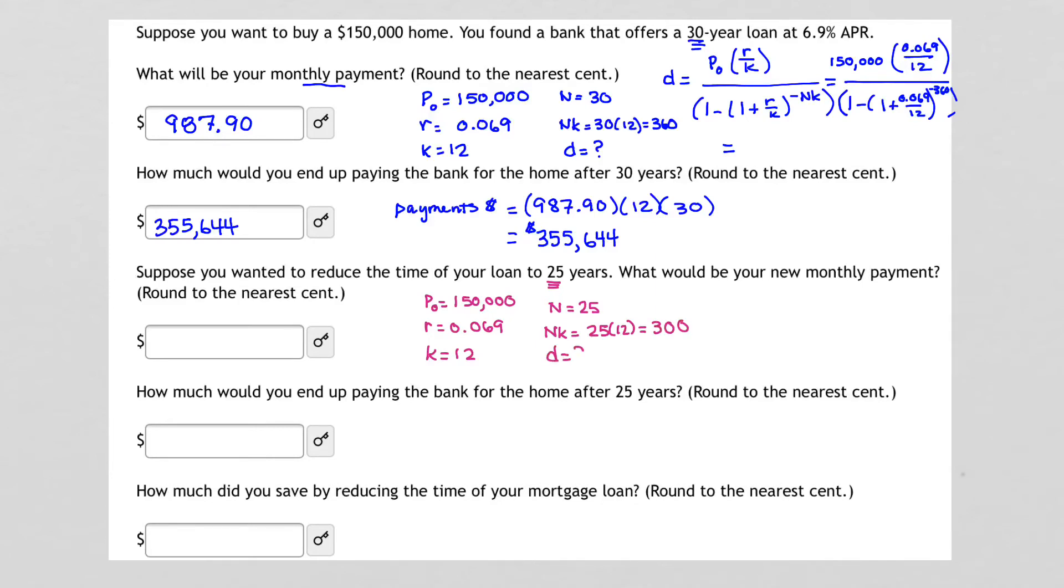D, that's what we're looking for. So again, I'm going to go to Desmos, and I'm going to input the expression. 150,000 times 0.069 over 12, divided by 1 minus 1 plus 0.069 over 12, raised to the negative 300 power. So this time, instead of 360, my power is actually going to be 300. Let's go do that quickly.